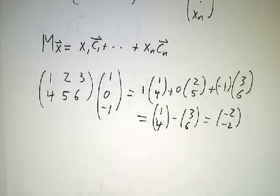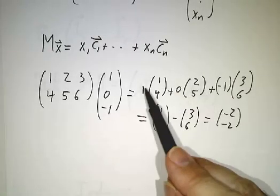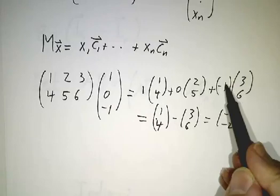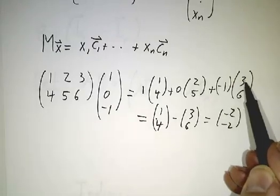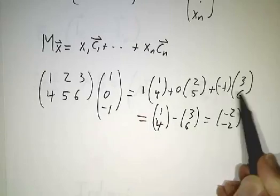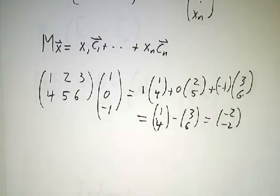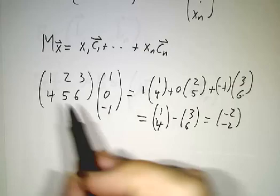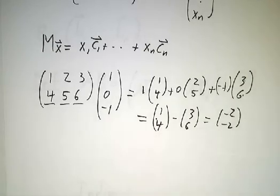And it's exactly as before for the same reason. The first entry is going to be 1 times 1, plus 0 times 2, plus negative 1 times 3, that's what we did before. The second entry is 1 times 4, plus 0 times 5, plus negative 1 times 6. So the calculation works exactly, you get the same answer, but you're thinking of it differently. You're thinking of it as a way of combining (1, 4) and (2, 5) and (3, 6).